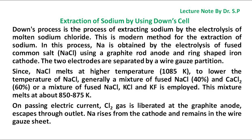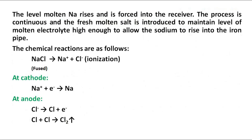On passing electric current, chlorine gas is liberated at the graphite anode and escapes through an outlet. Sodium rises from the cathode and remains in the wire gauze sheet. The molten sodium rises and is forced into the receiver. The process is continuous and fresh molten salt is introduced to maintain the level of molten electrolyte high enough to allow the sodium to rise into the iron pipe.